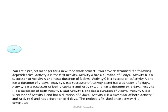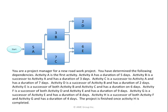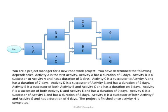I begin with the start. Activity A is the first activity with a duration of 5 days. Both activity B and activity C are successors to activity A, and I fill in their durations. Activity D is a successor to activity B with a duration of 2 days. Activity E is a successor to both B and C with a duration of 6 days. F is a successor to D and E with a duration of 9 days. G is a successor to E with a duration of 8 days. H is a successor to both F and G with a duration of 4 days. The project is finished once activity H is completed.